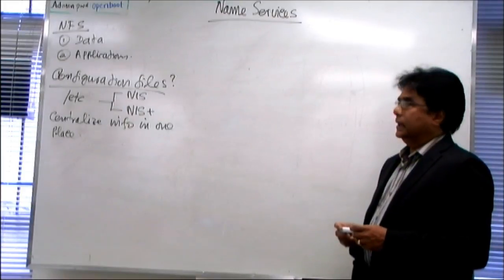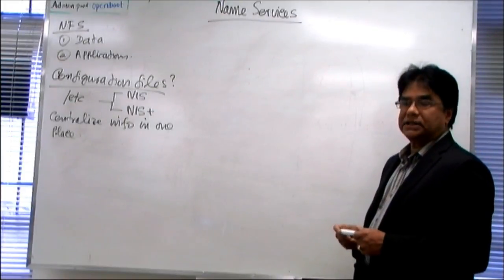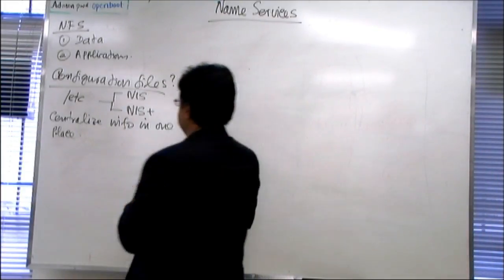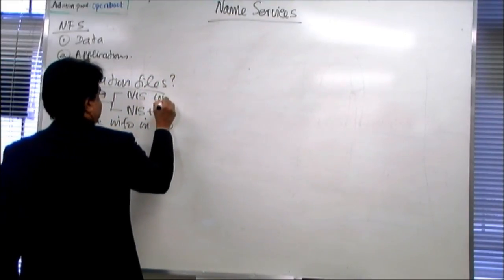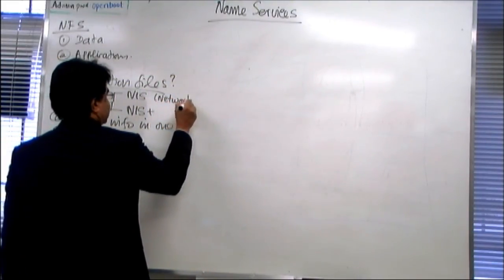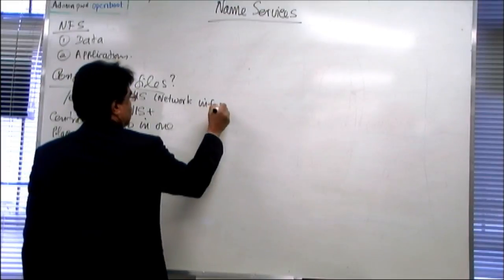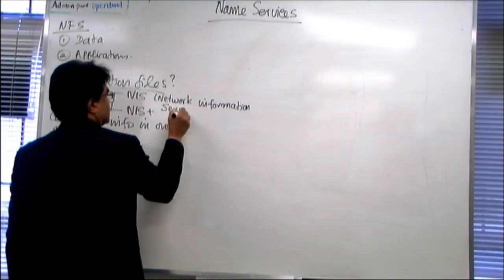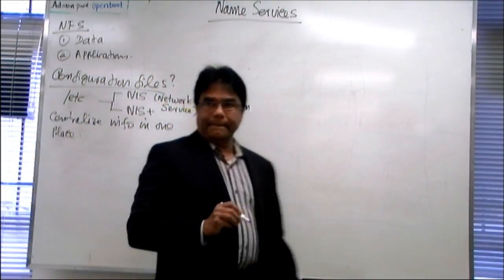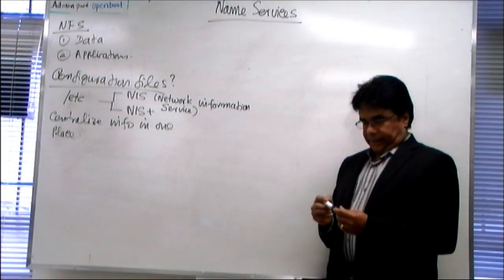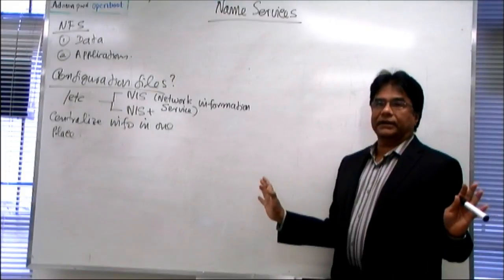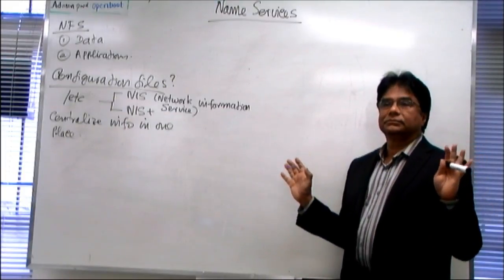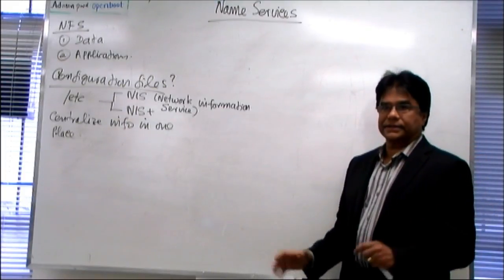What's the full form of NIS? Network Information Service. So it will have all the information related to the network in one place. So if you want to get information about the network, you know where to go. That's the purpose of that.